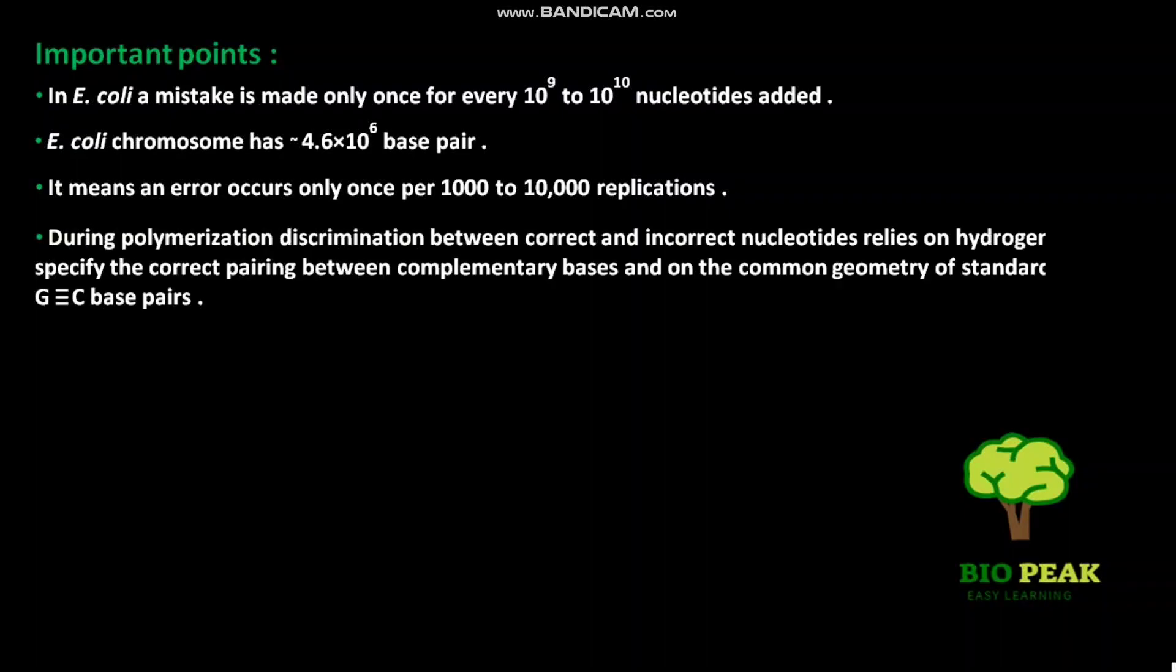During polymerization, discrimination between correct and incorrect nucleotides relies on hydrogen bonds that specify the correct pairing between complementary bases, and on the common geometry of standard AT and GC base pairs.